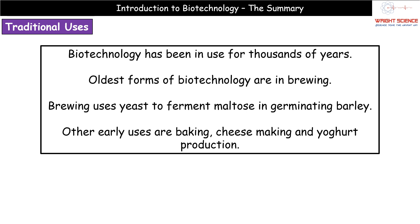This isn't new. Using living things for an industrial process is something we've been doing for thousands of years. Going back to some of the earliest forms, brewing — producing alcohol — appears across many cultures throughout human history. We use yeast to carry out fermentation of maltose found in germinating barley, producing alcohol as the end product. Other long-standing processes include baking, where yeast has been involved for a very long time.